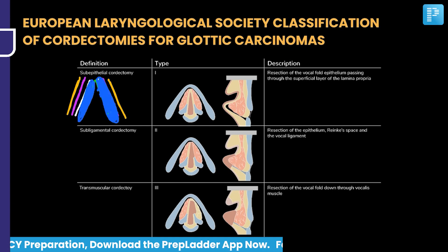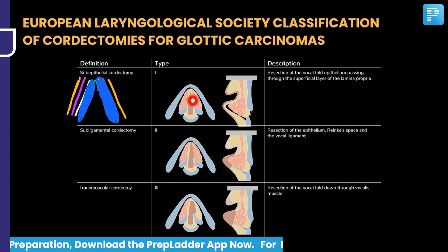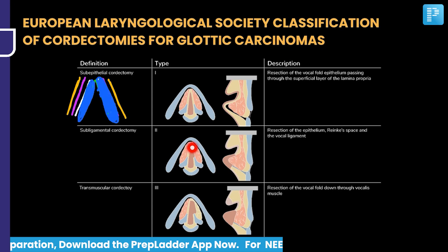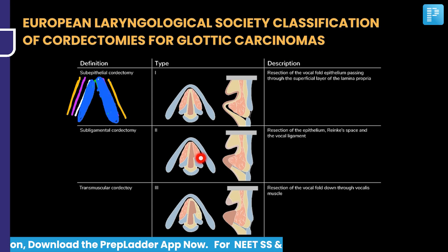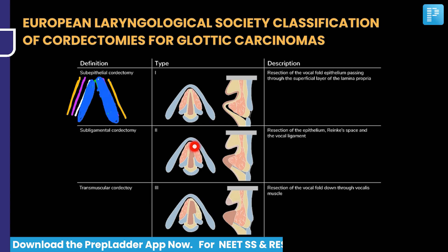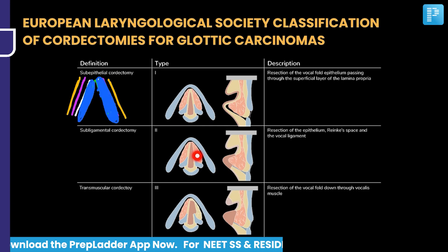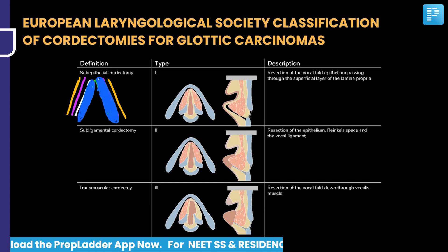In the first surgery, only the epithelium is removed. In the second surgery, we are removing up to the vocal ligament, so what remains is only the vocalis muscle. This type of surgery is called type 2, which is sub-ligamental chordectomy.